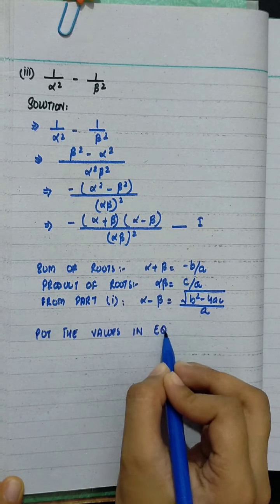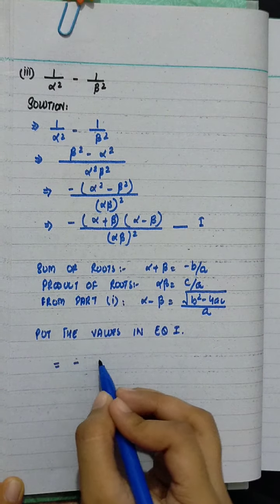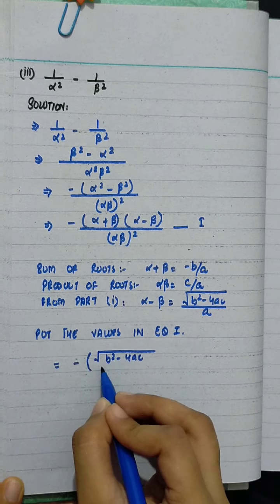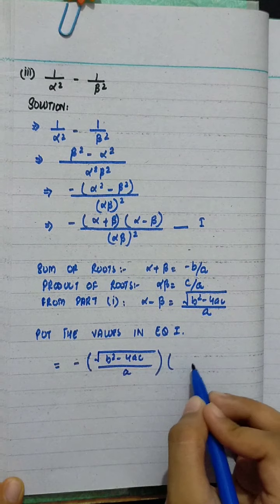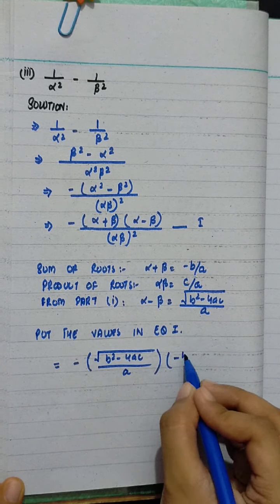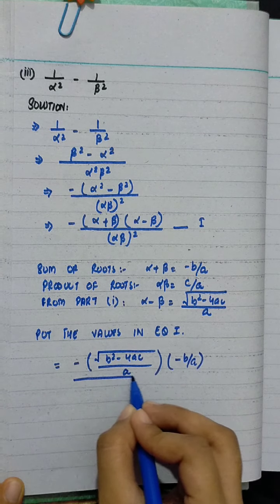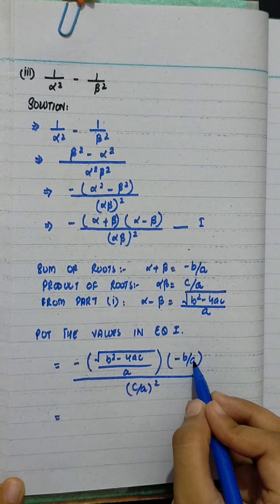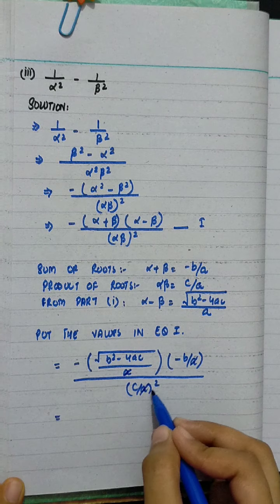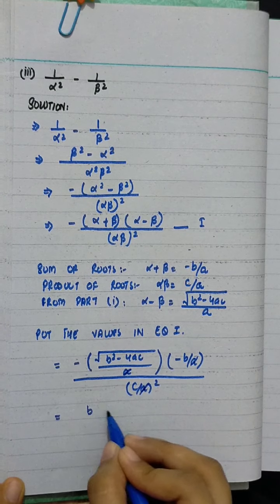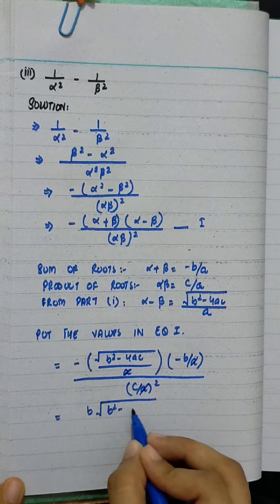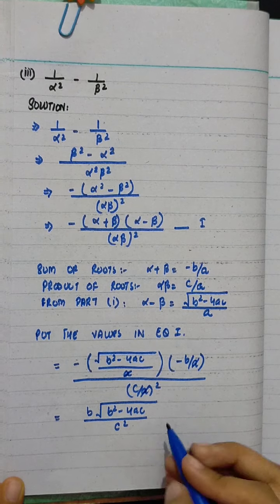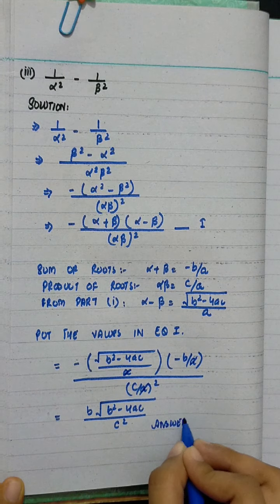Putting in the values: minus under root b squared minus 4ac over a, into minus b over a, divided by c over a squared. The a's and negatives simplify — minus minus gives plus — so the answer is b times under root b squared minus 4ac divided by c squared.